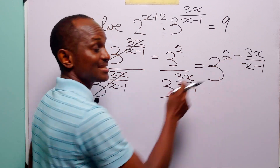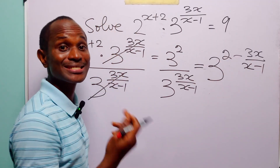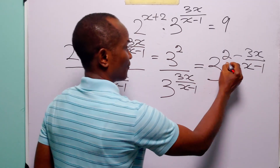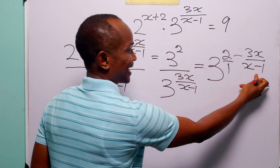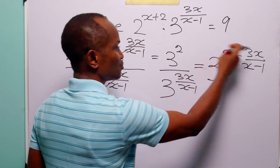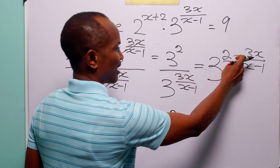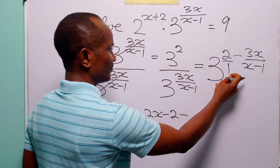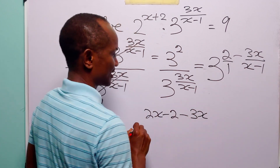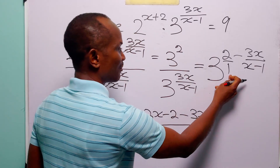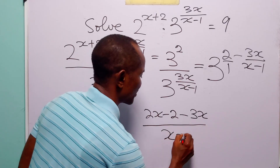Now to further simplify this exponent we are going to combine these two fractions into one single unit. Of course you know that 2 is 2 over 1. We multiply 2 by x minus 1, so 2 times x minus 1 gives us 2x minus 2. Then we have minus, and we multiply 1 by 3x, which of course equals 3x. Then dividing by 1 times x minus 1, we have x minus 1.